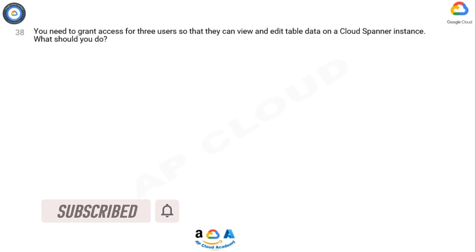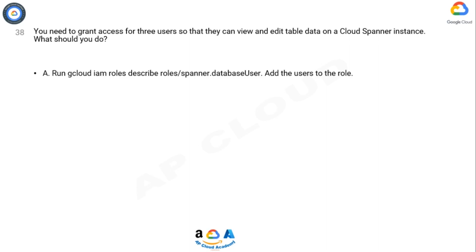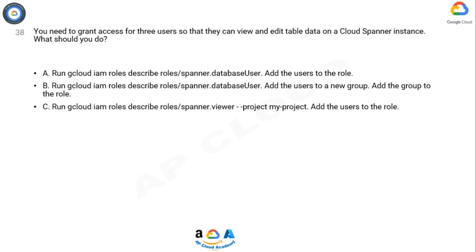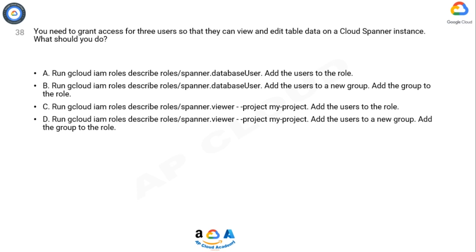You need to grant access for three users so that they can view and edit table data on a Cloud Spanner instance. What should you do? Option A: run gcloud IAM roles describe roles/spanner.databaseUser, add the users to the role. Option B: run gcloud IAM roles describe roles/spanner.databaseUser, add the users to a new group, add the group to the role. Option C: run gcloud IAM roles describe roles/spanner.viewer, project my-project, add the users to the role. Option D: run gcloud IAM roles describe roles/spanner.viewer, project my-project, add the users to a new group, add the group to the role.